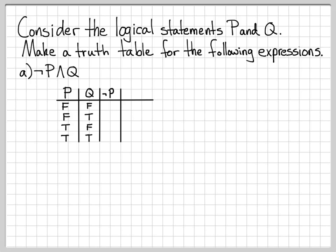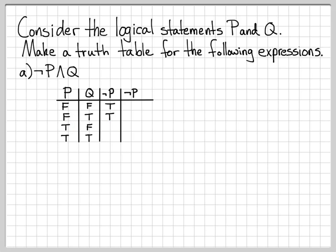So the next thing I want to do is make a column for 'not P'. Filling in this column is pretty easy. 'Not P' means take the value for P and negate it. So an F turns into a true. On the next line, again we look at F and negate it, so we get T again. Then for true, we negate it to get false, and so on. That is how we fill in the column for 'not P'.